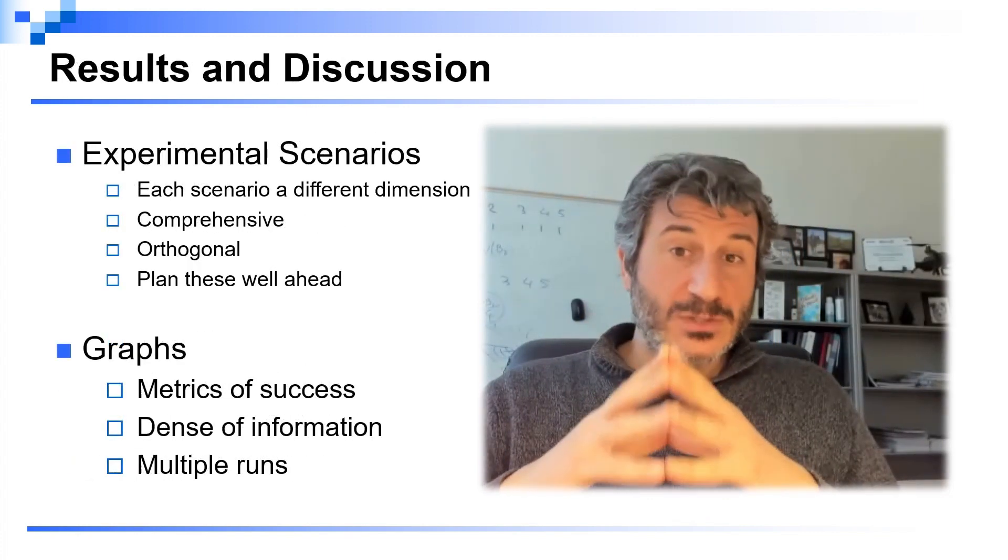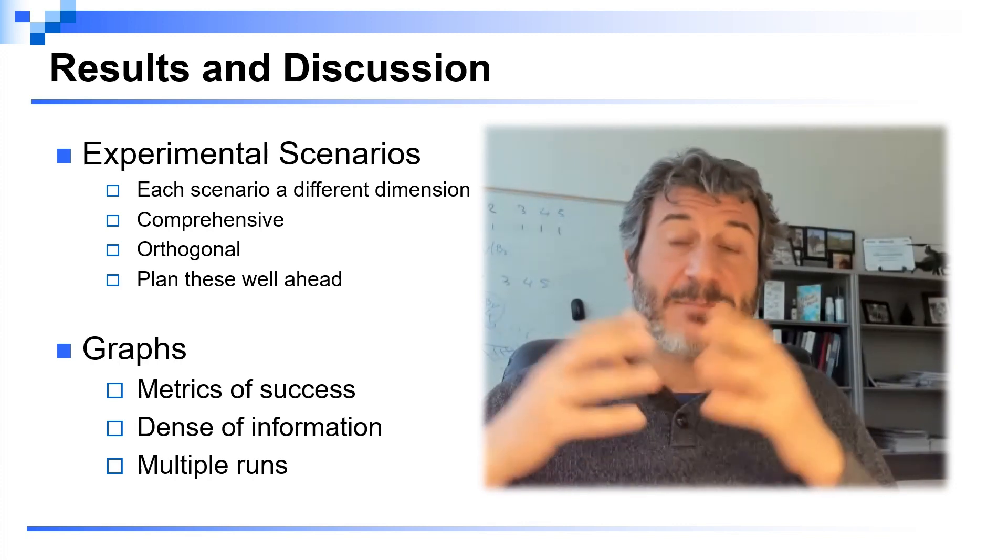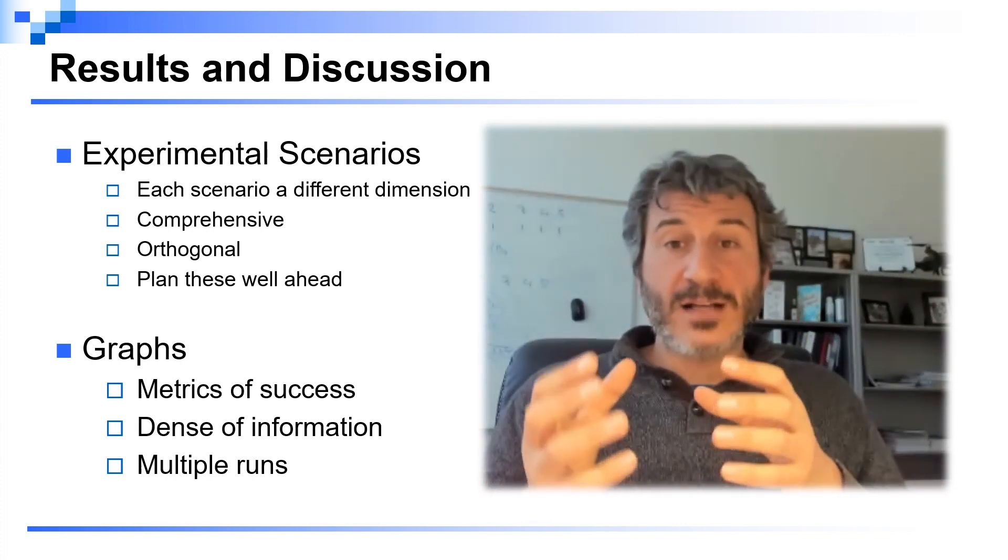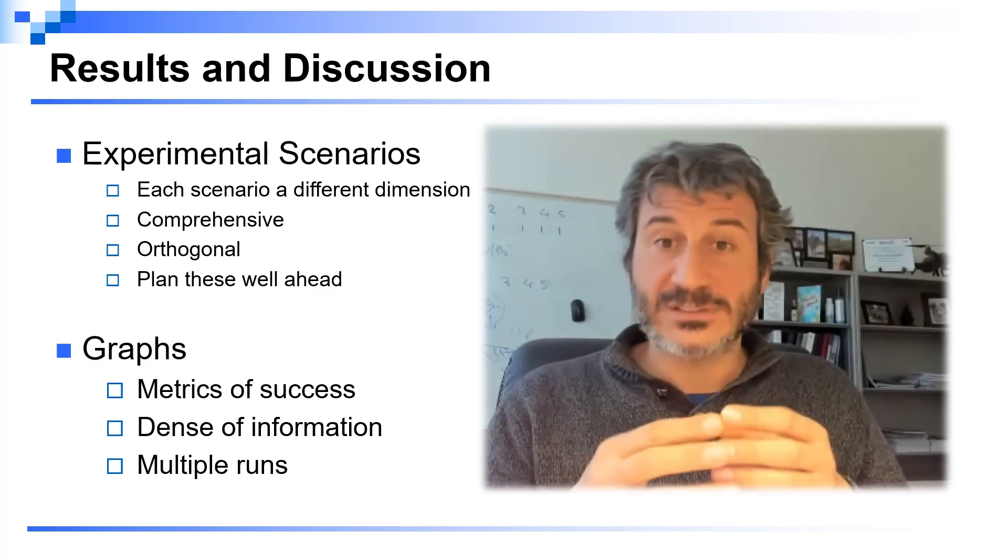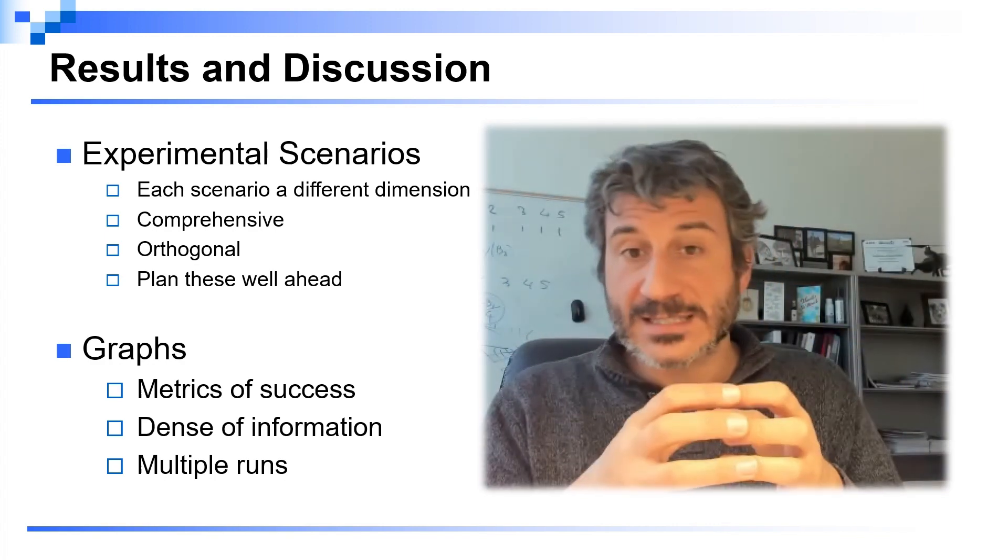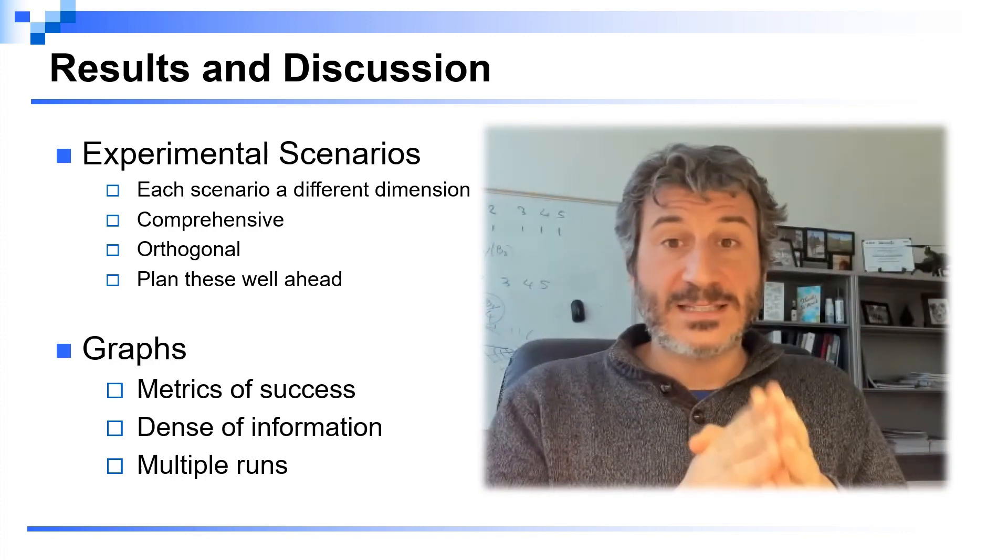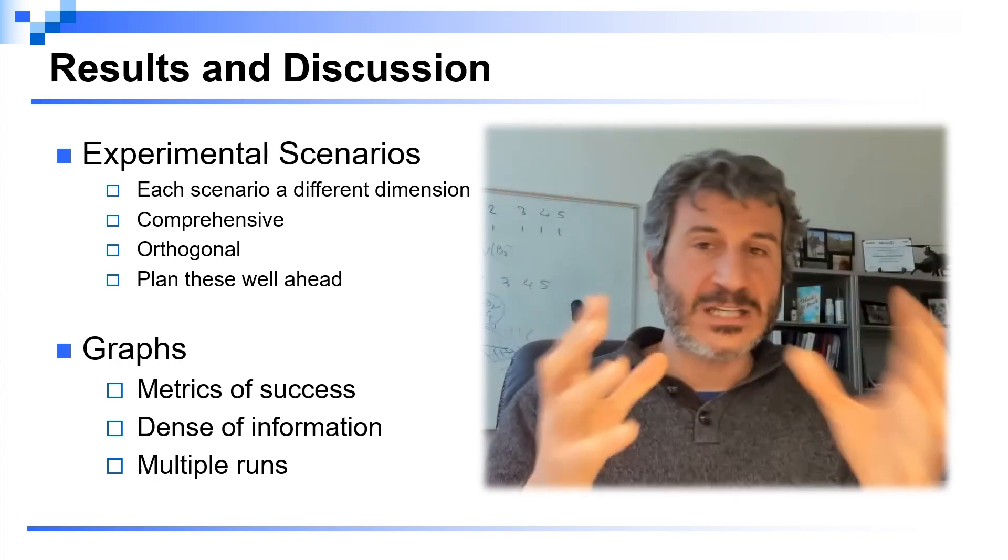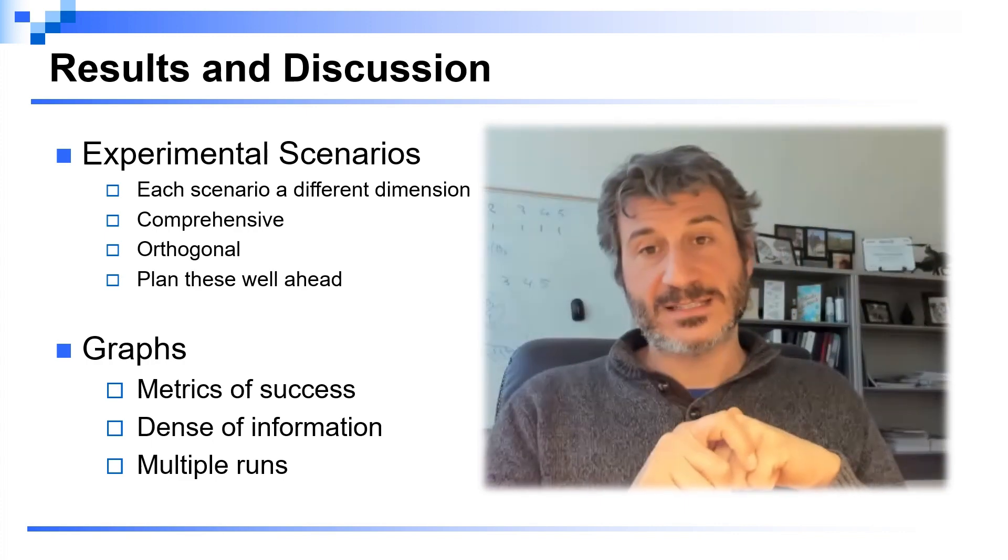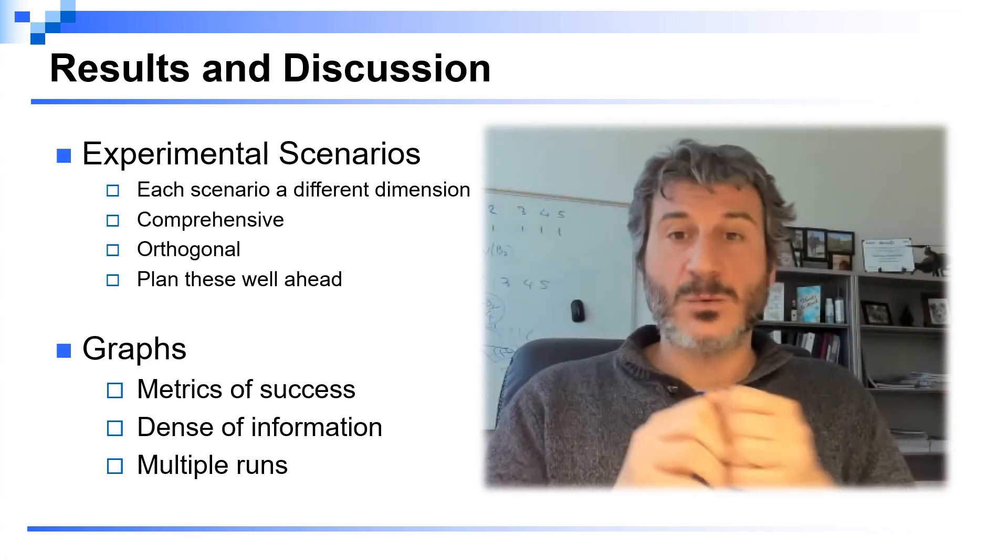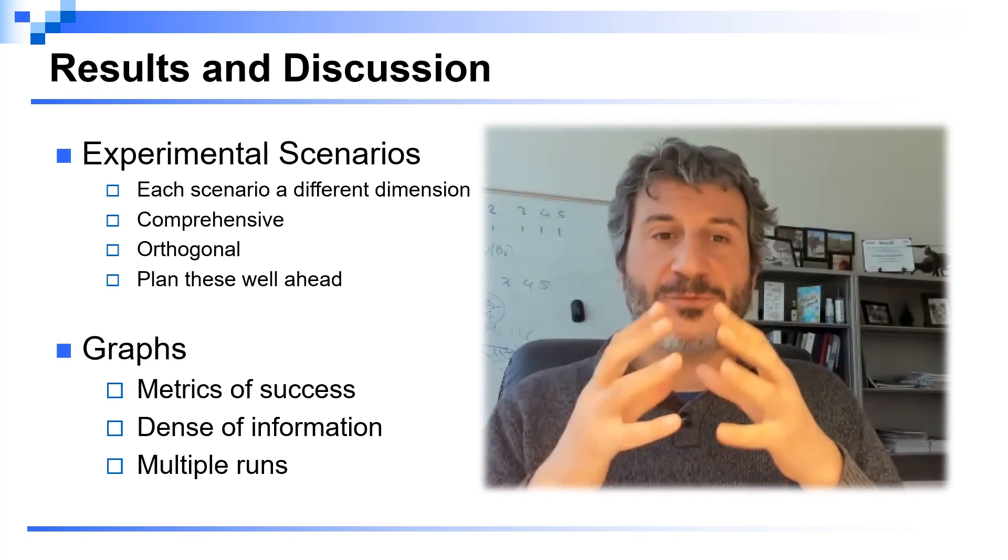It is now finally time to talk about the actual results. What I like to do is organize the results in experimental scenarios. Each experimental scenario analyzes a different dimension of the problem, so that these dimensions together are comprehensively covering what can happen in practice in many different settings. Make sure that these dimensions are orthogonal, so when you study one specific dimension you keep the others constant. It's very important to plan this well ahead. I always sit down with my students once the implementation is more or less complete and ask what are the experimental scenarios that you're going to study in this paper.